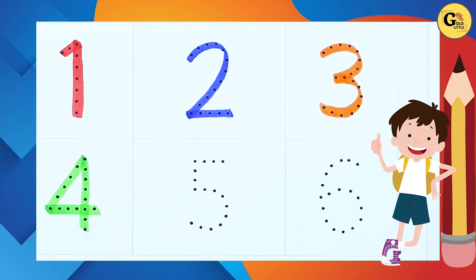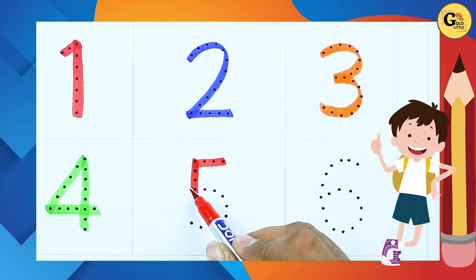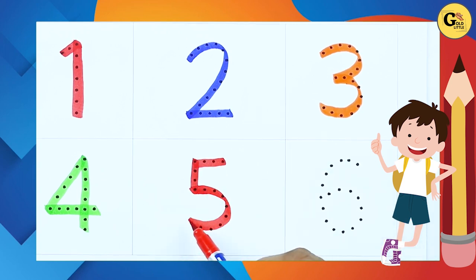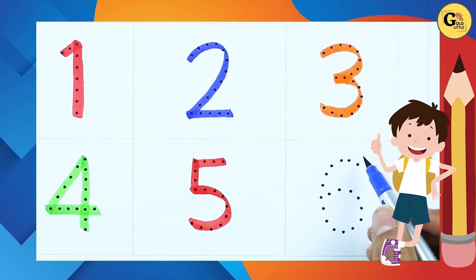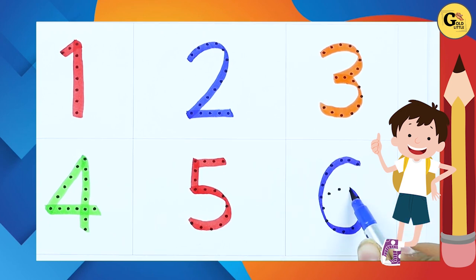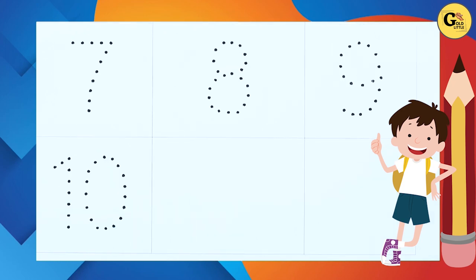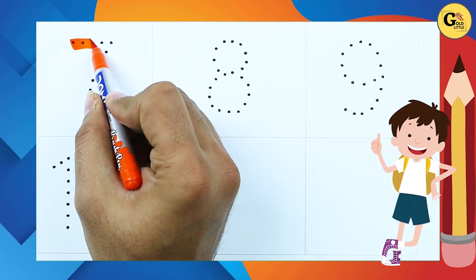It's number four. It's number five with red color, number five. Number six with blue color, number six. Number seven with orange color.